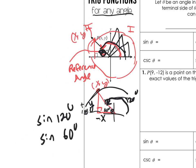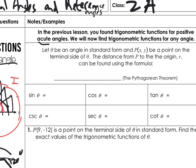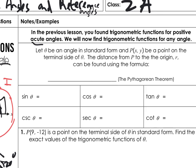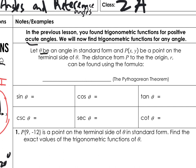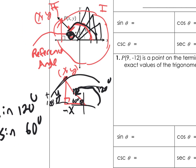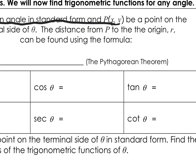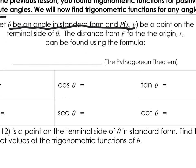In the past we were using positive acute angles; we will now find trigonometric functions for any angle. Let theta be an angle in standard form — that's what this is, standard form around a circle. Using the point (x, y), that point is on the terminal side of theta. When you open the angle up, where it stops opening is called the terminal side. The distance from point P to the origin is called r.